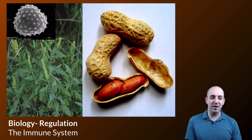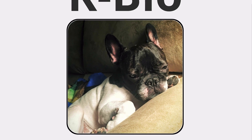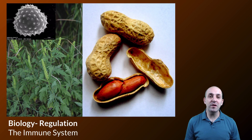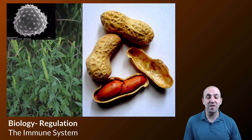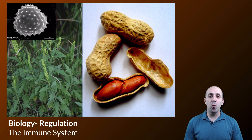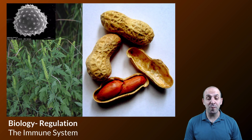Hi, and welcome to the final video in our regulation section of the course. This video deals with the immune system. Our last video looked at dysregulation and the effects of dysregulation on different levels of organization in the biological system. This video is going to look at one of the systems in place inside organisms that allows them to recover from a specific type of dysregulation — the type caused by pathogens or organisms that cause disease.